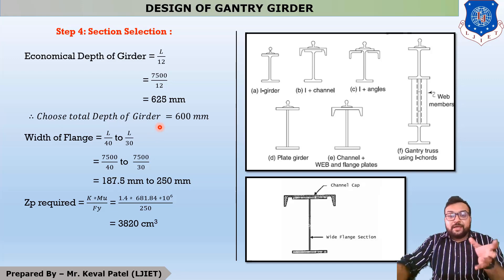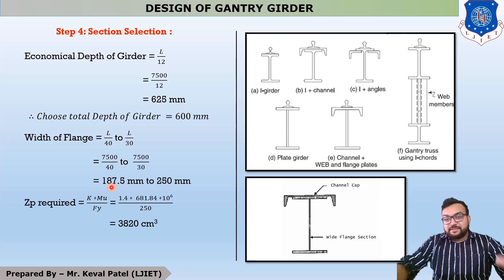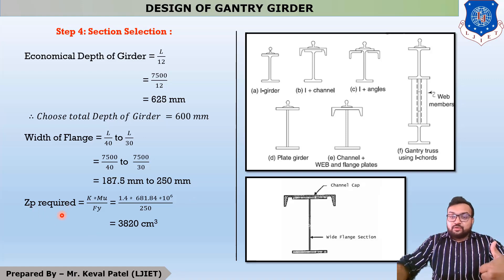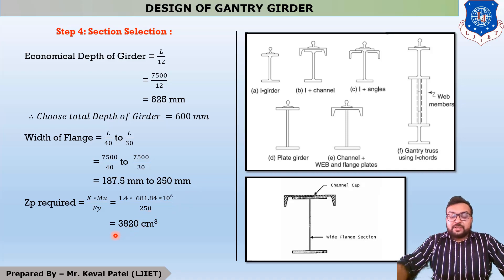You have to choose a total section depth of less than 625 mm. In this example, I am choosing a depth of 600 mm. The second criterion is the width of flange, which should be in the range of L/40 to L/30 — that is, 187.5 mm to 250 mm. The third component is Zp, where the equation is k into Mu divided by fy, with k in the range of 1 to 1.5, so using 1.4 into 681.85 into 10 raised to 6 divided by 250, giving Zp equal to 3820 cm³.